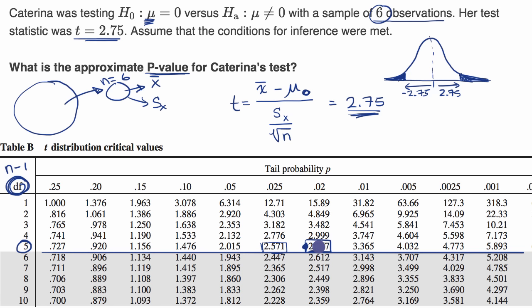So our tail probability—and remember, this is only giving us this probability right over here—our tail probability is going to be between 0.025 and 0.02, and it's going to be closer to this one. It'll actually be a little bit greater because we are less than 2.757. So we could say this is approximately 0.02.